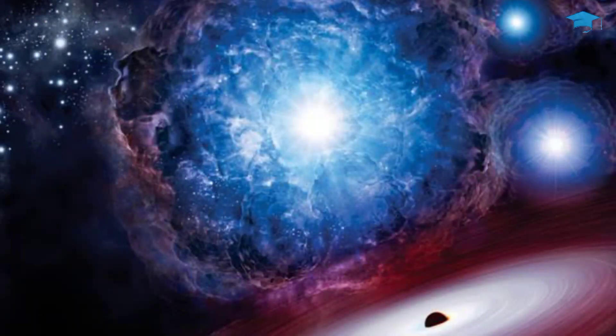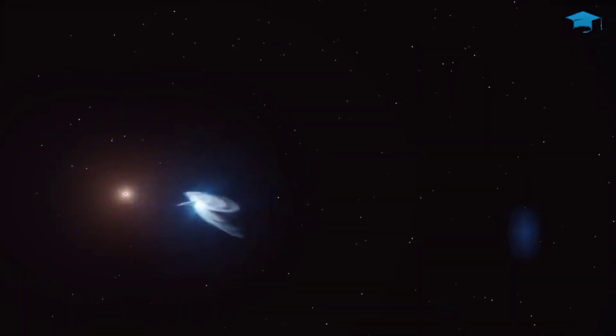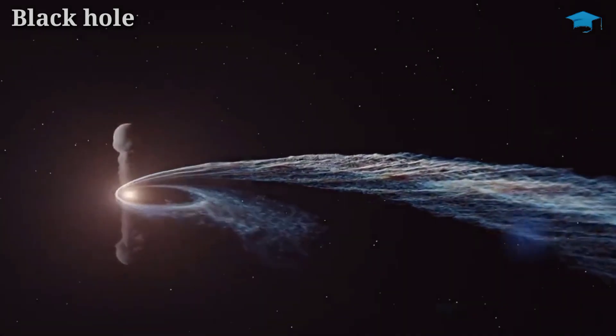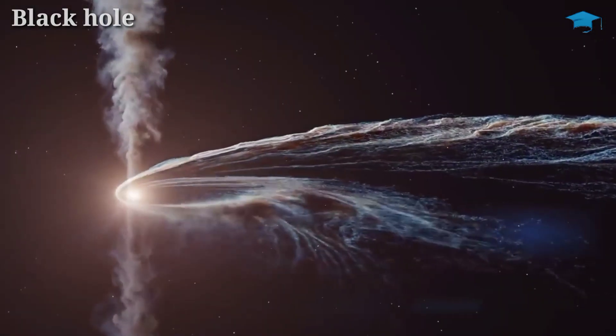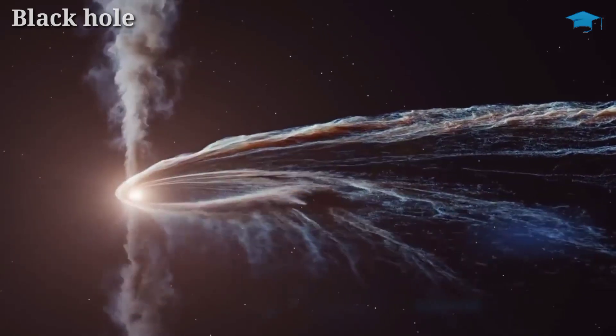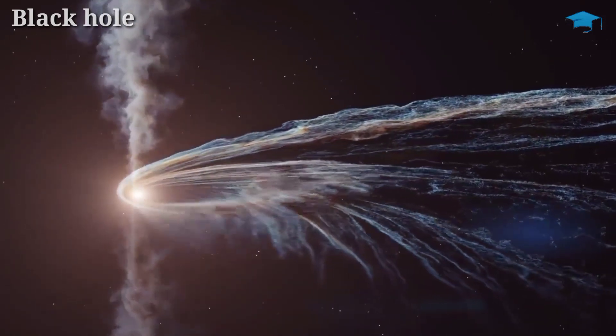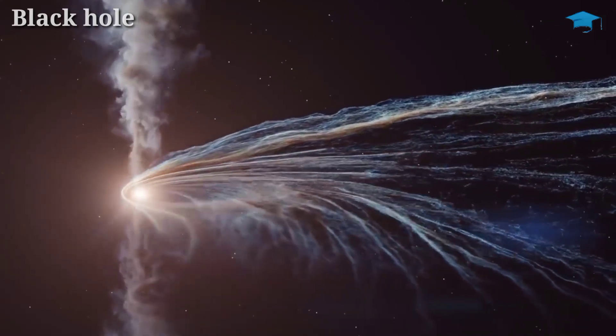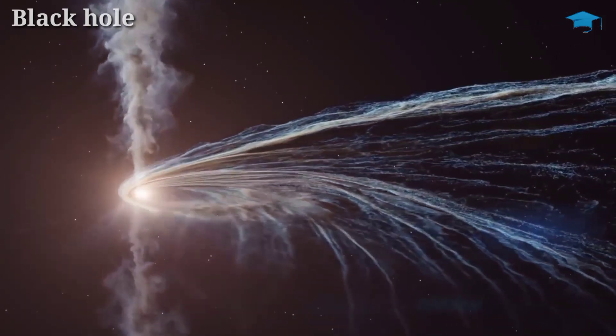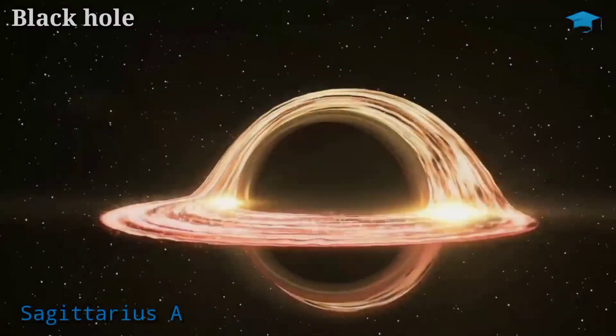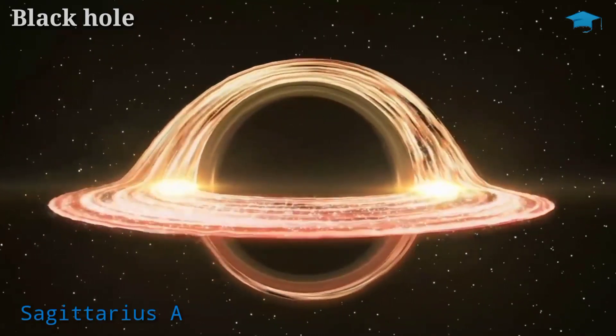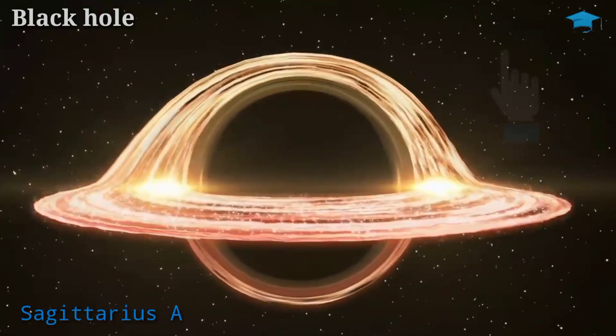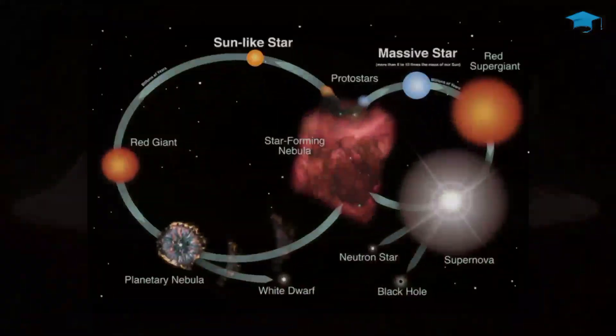Small stars may become a white dwarf or neutron star. But stars with high masses become black holes after a supernova explosion. Since the remnant core does not have enough pressure to oppose against the force of gravity, the star continues to collapse into a singularity and eventually it becomes a black hole. An example of a black hole is Sagittarius A. The gravity of a black hole is so strong that even light cannot escape from it. To understand more about black holes you can click the card right up here.